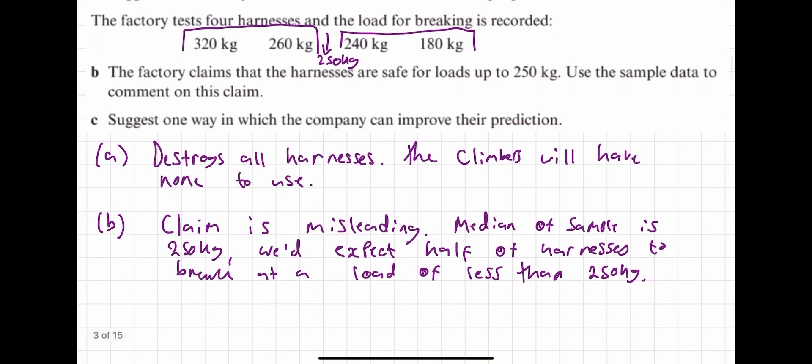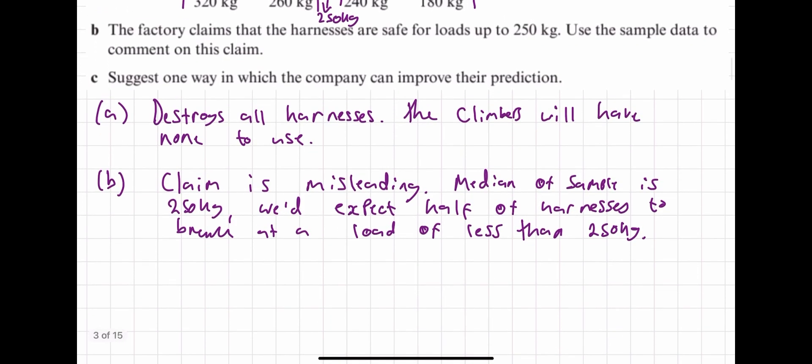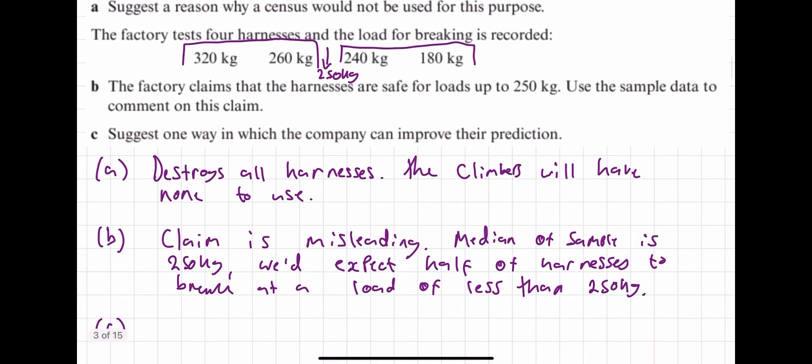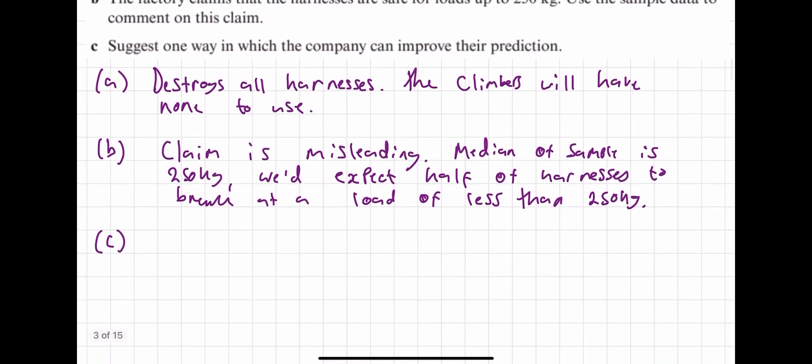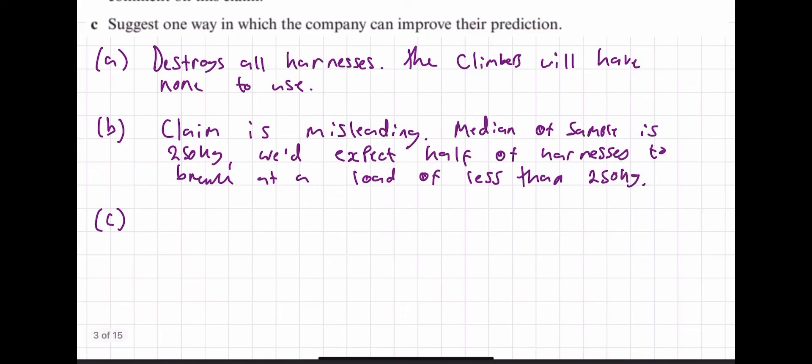And then suggest one way in which the company can improve their prediction. The main answer of improving predictions is thinking about sample sizes. They've used a sample of how many? One, two, three, four. So they can use a much larger sample size to get a better result.